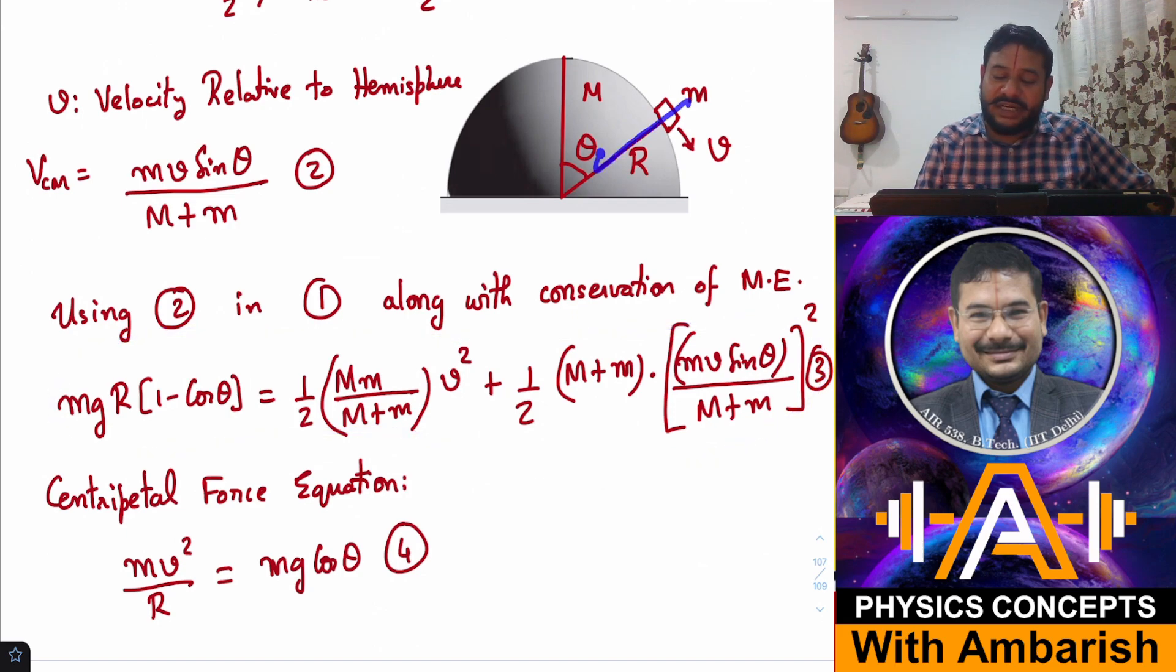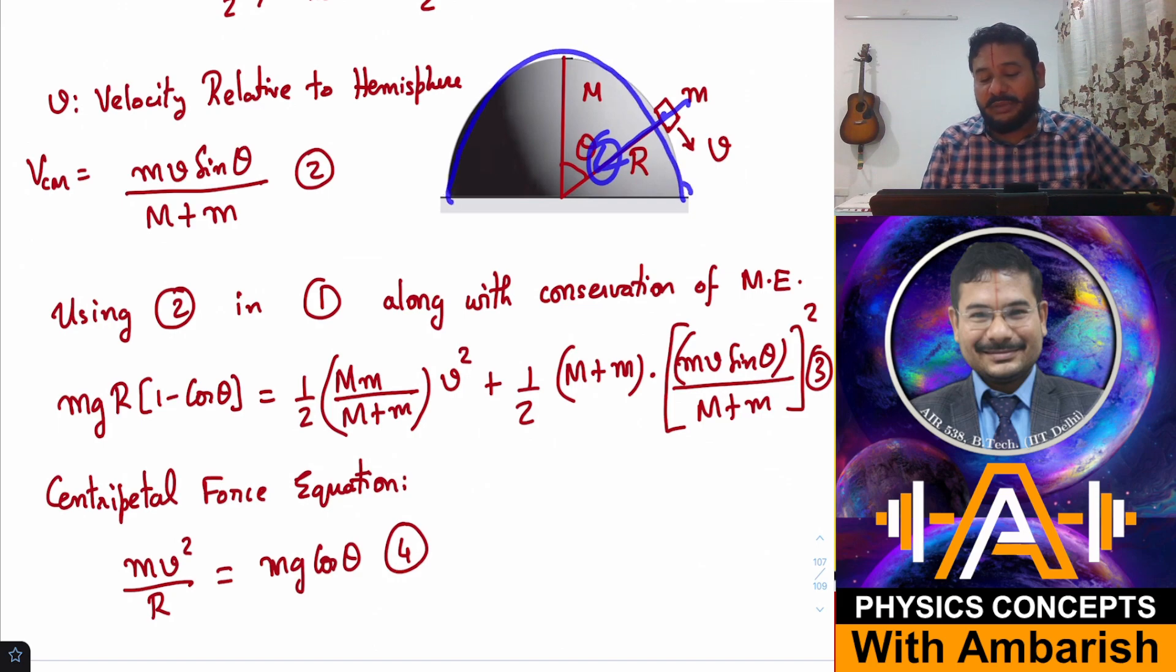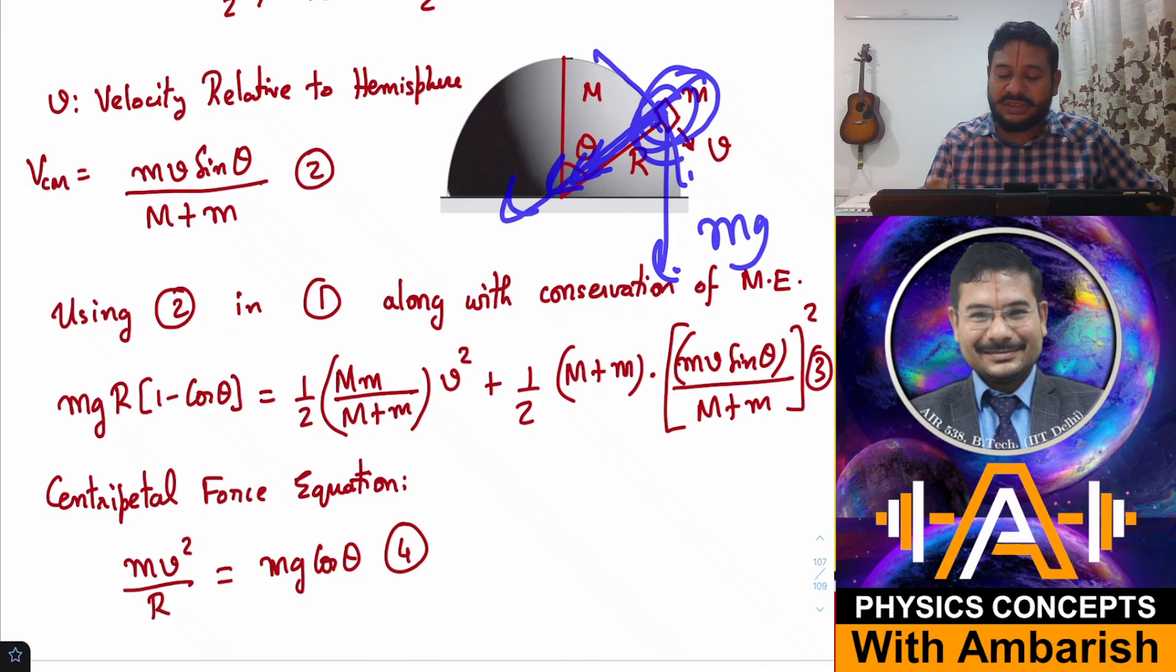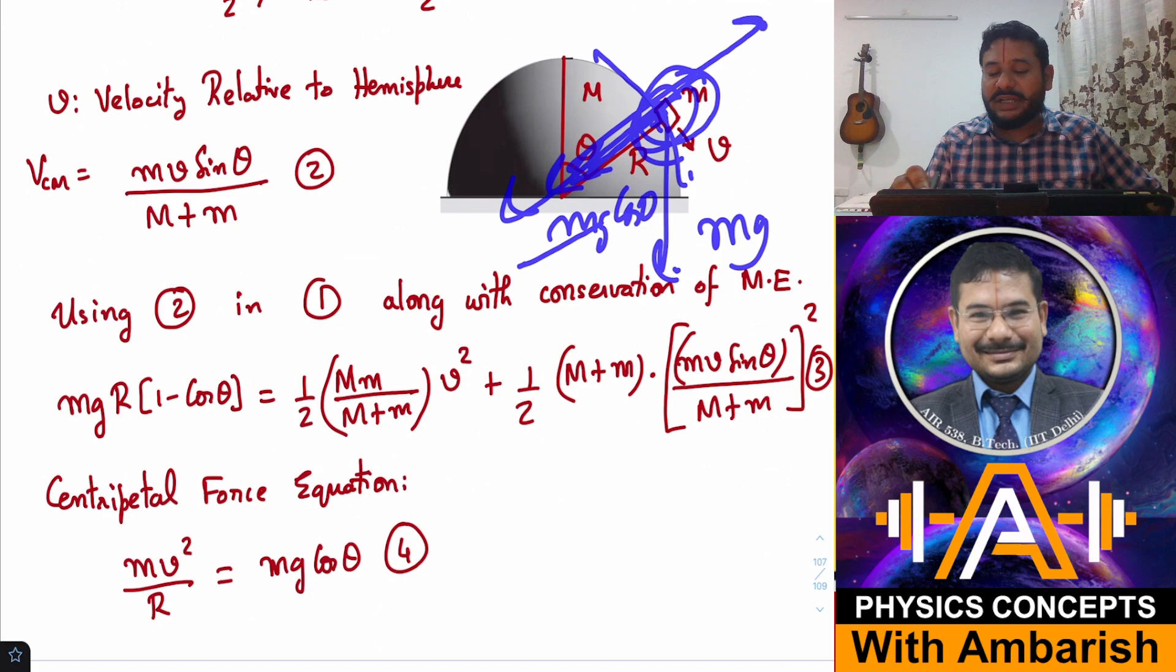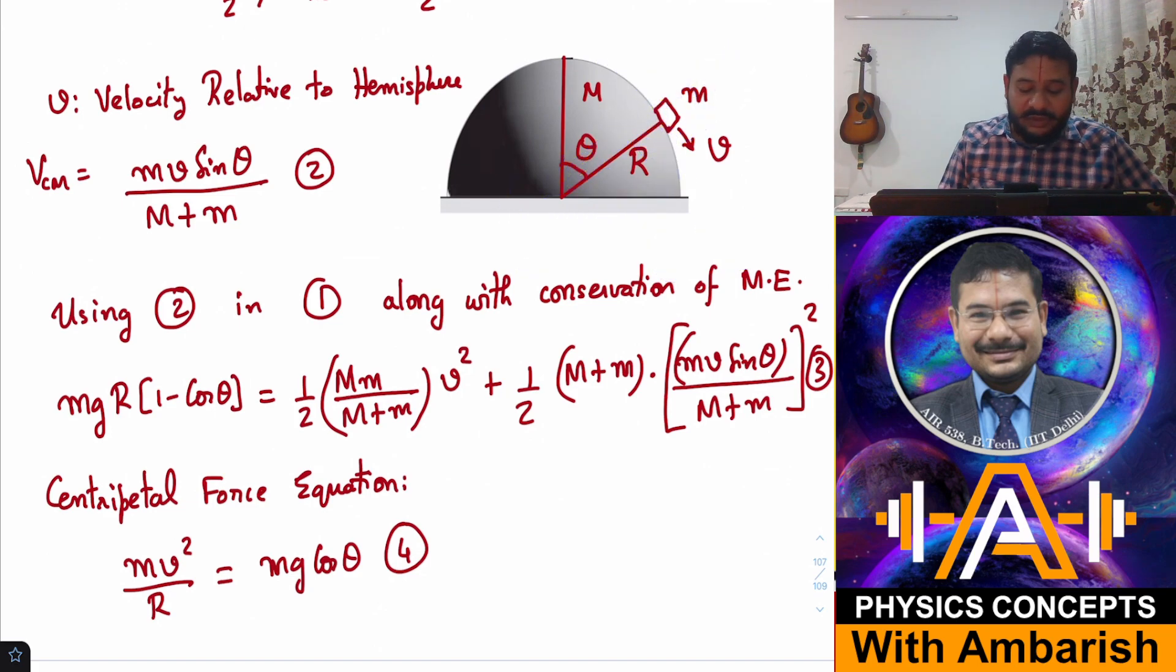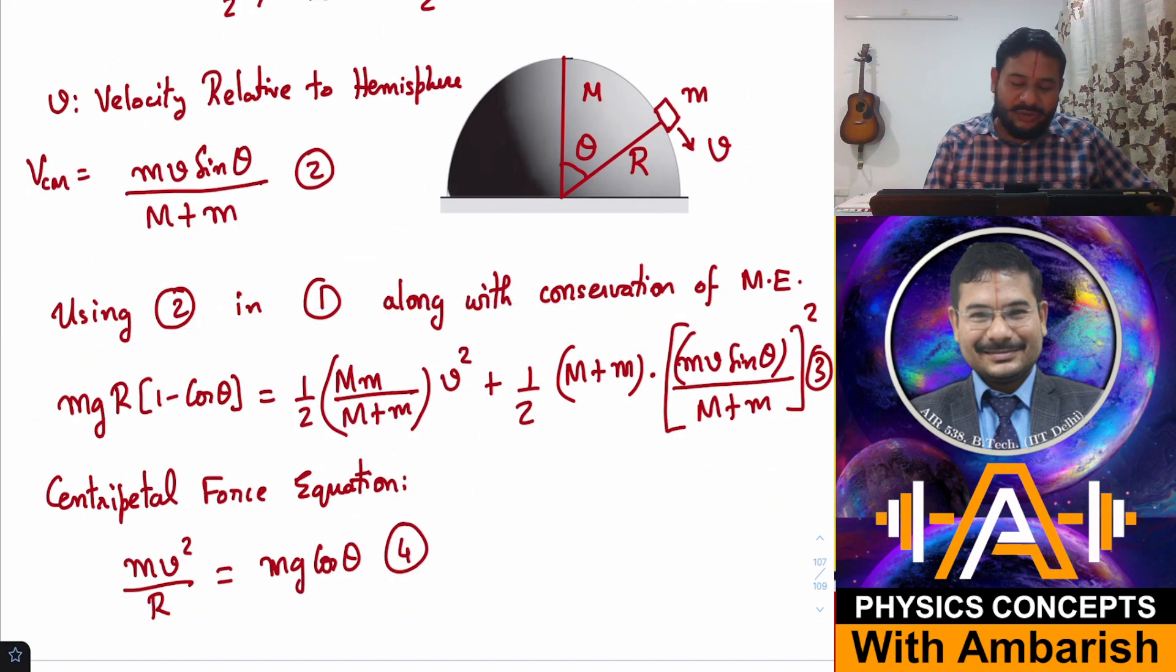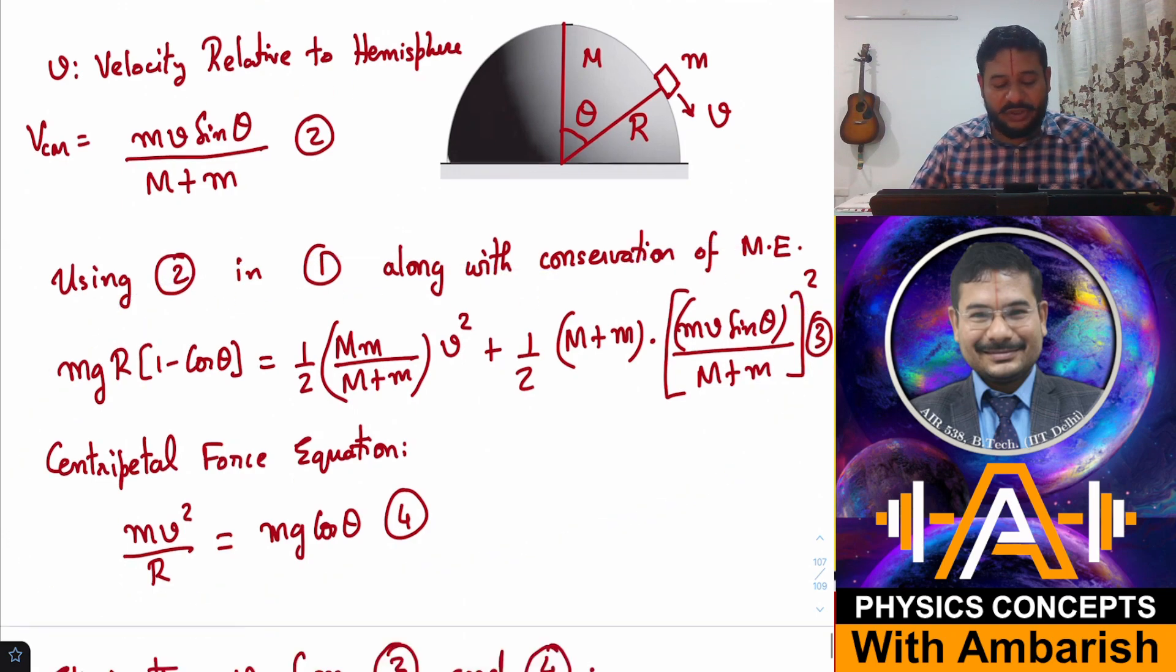Another equation I can write is for the centripetal force. From the frame of the hemisphere, which is an inertial frame, this is going along a circular path and its acceleration is V squared by R in this direction. What is the force in this direction? Mg is acting downward, so force in this direction is Mg cos theta, because normal reaction has vanished. So the centripetal force equation is mV squared by R equals mg cos theta. Now I have equation 3 and equation 4 with two unknowns: theta and V. I can eliminate V from this.